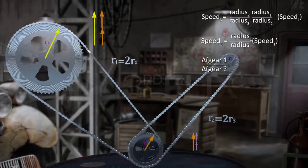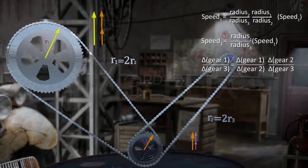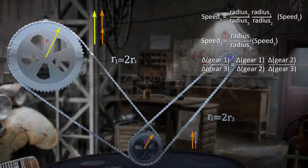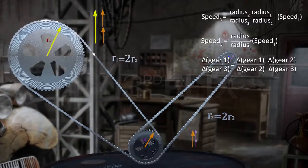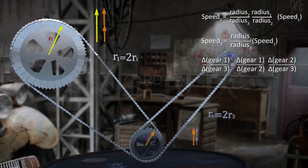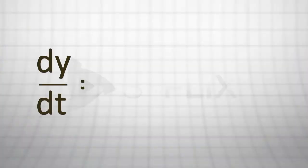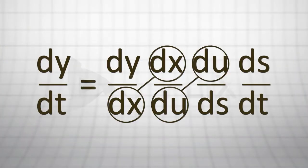To put it differently, the rate of change between gears 1 and 3 is the same as the product of the rate of change between gears 1 and 2, and the rate of change between gears 2 and 3. Therefore, we can say that the total rate of change is the product of the two intermediate rates of change.